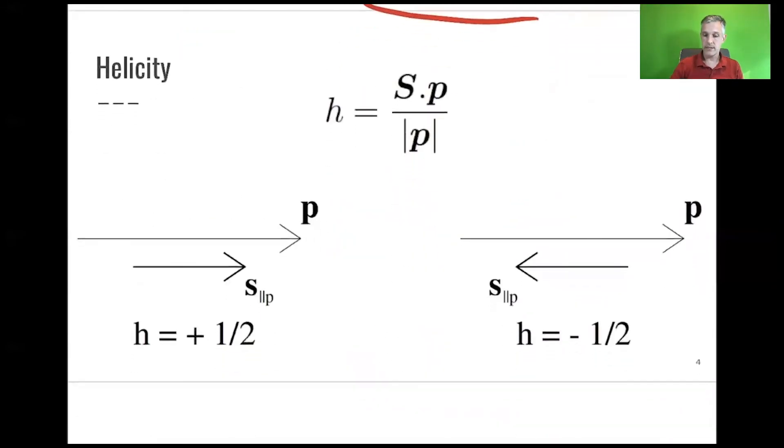This immediately gets us to a new definition, that of helicity. You can define the helicity of a particle as the spin of the particle dotted with the momentum of the particle, normalized by the momentum. For a fermion which has spin 1/2, you get +1/2 if the spin points in the momentum direction, and -1/2 if it points in the opposite direction.